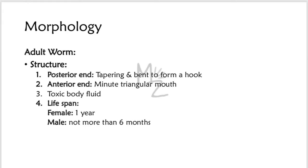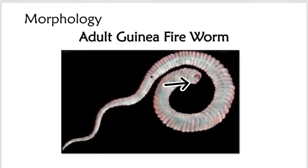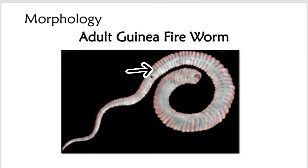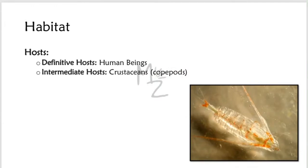The posterior end is tapering and formed into a hook-like structure — tapering means it is narrow or small compared to the whole body. The body fluid is toxic. Lifespan: for the female it is one year, and for the male it is not more than six months. As seen in the picture, the anterior end has a small triangular mouth, the posterior end is narrow and tapering, and the worm has a twin thread-like cylindrical structure with a smooth body surface.